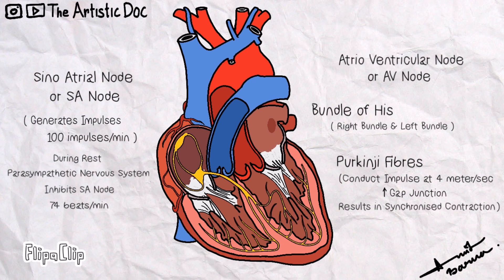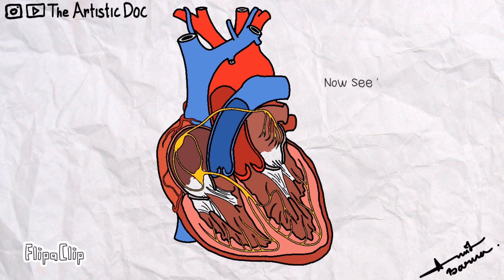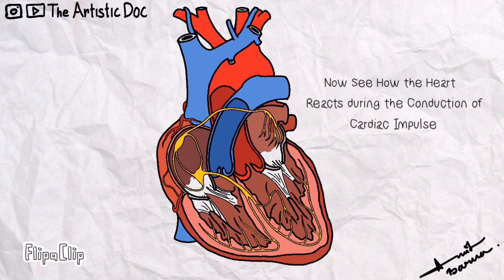There is another fiber that goes to the left atria called Bachmann's bundle. Now see how the heart reacts during the conduction of the impulse.